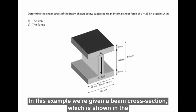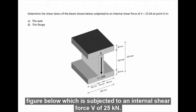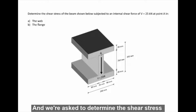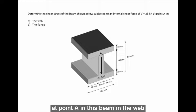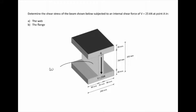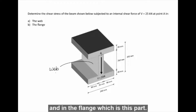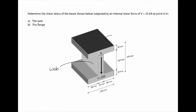In this example, we have a given beam cross-section shown in the figure below, which is subjected to an internal shear force V of 25 kN. We are asked to determine the shear stress at point A in this beam in the web, which is this part, and in the flange, which is this part.